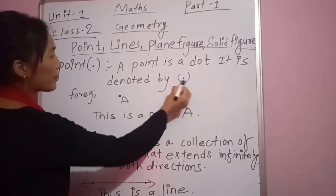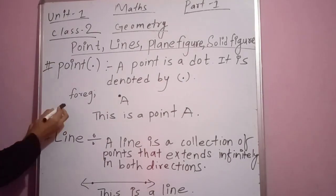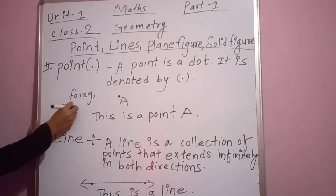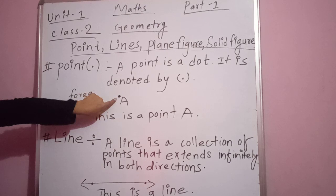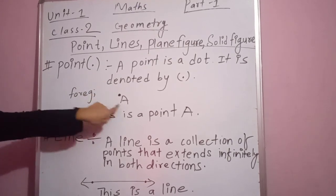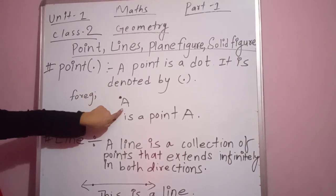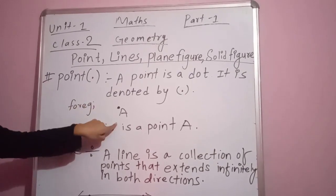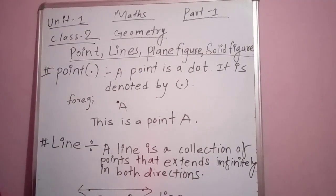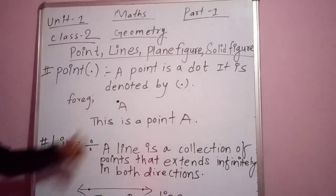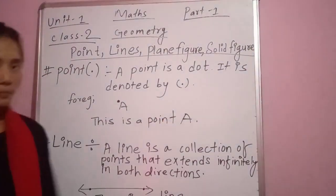This is the representation of a point. Here I have given one example. Here is a point that I have made, and I have given a name to this point. The name that I have given to this point is A.